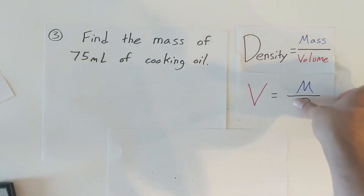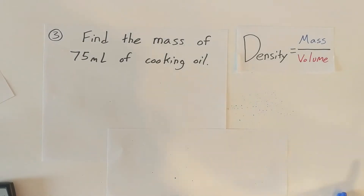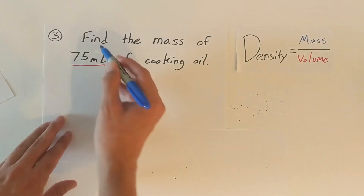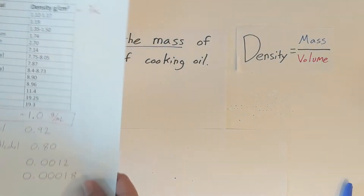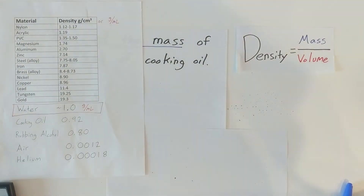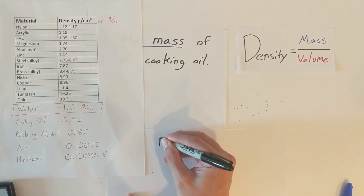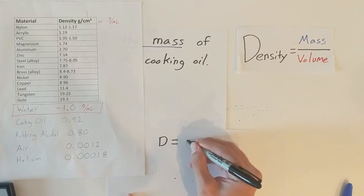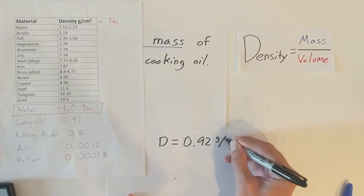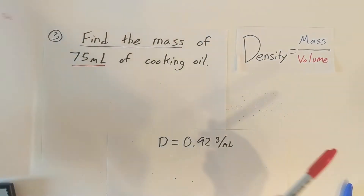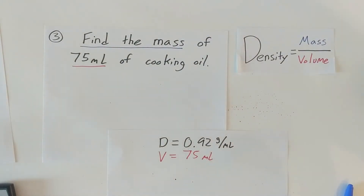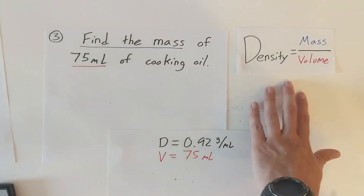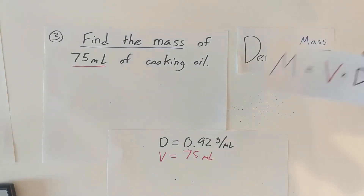For our third practice problem, find the mass of 75 milliliters of cooking oil. Now we are finding mass — the opposite of the last problem. We know it's cooking oil, so we use our density chart: density equals 0.92 grams per milliliter, and volume equals 75 milliliters. We're going to rearrange the equation to solve for mass.